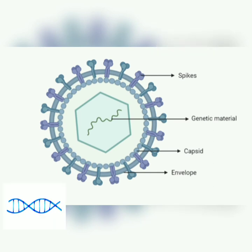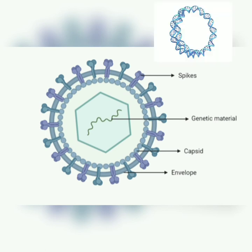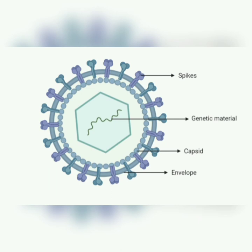Double-stranded has a normal DNA-like structure. Single-stranded is just like a thread. Linear means it is a straight line, circular means the front and end are joined together forming a circle, and segmented means the nucleic acid is divided into different segments. Viruses use their genetic material to replicate themselves in host cells, which results in disruption of host cellular activities or the death of the host.